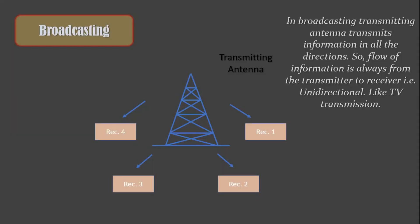In broadcasting, transmitting antenna transmits information in all directions. So, flow of information is always from the transmitter to receiver, like television broadcasting.